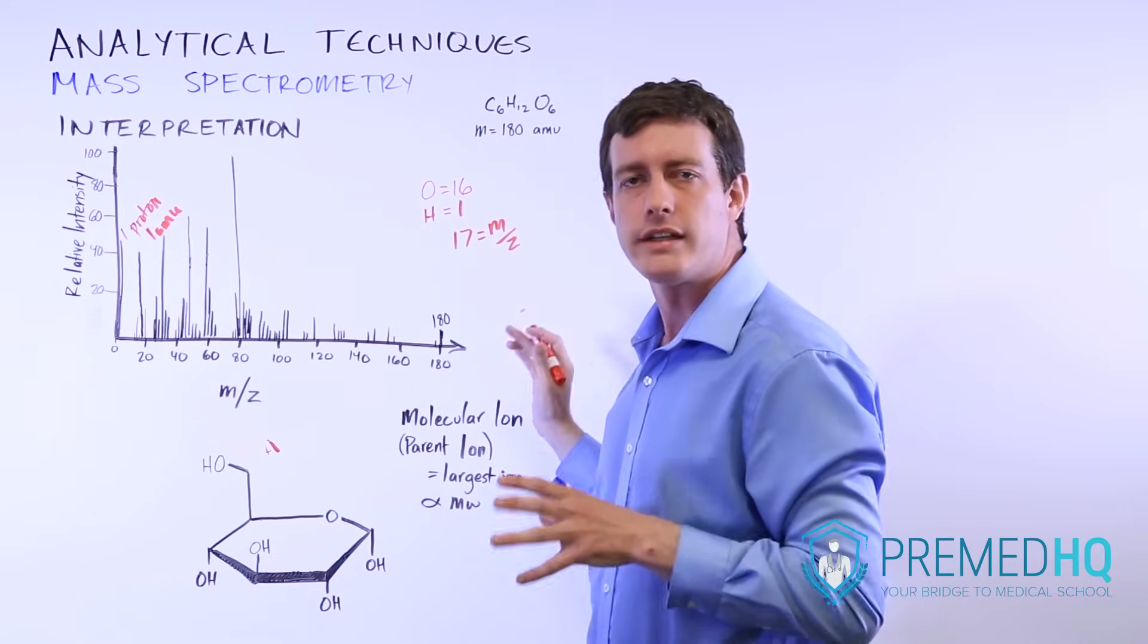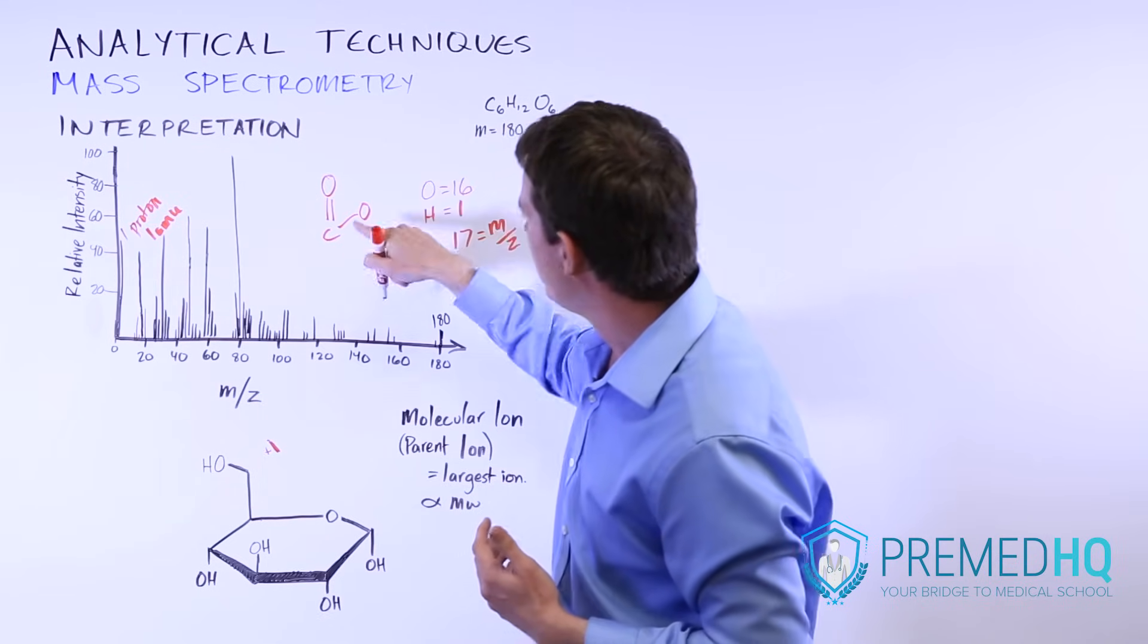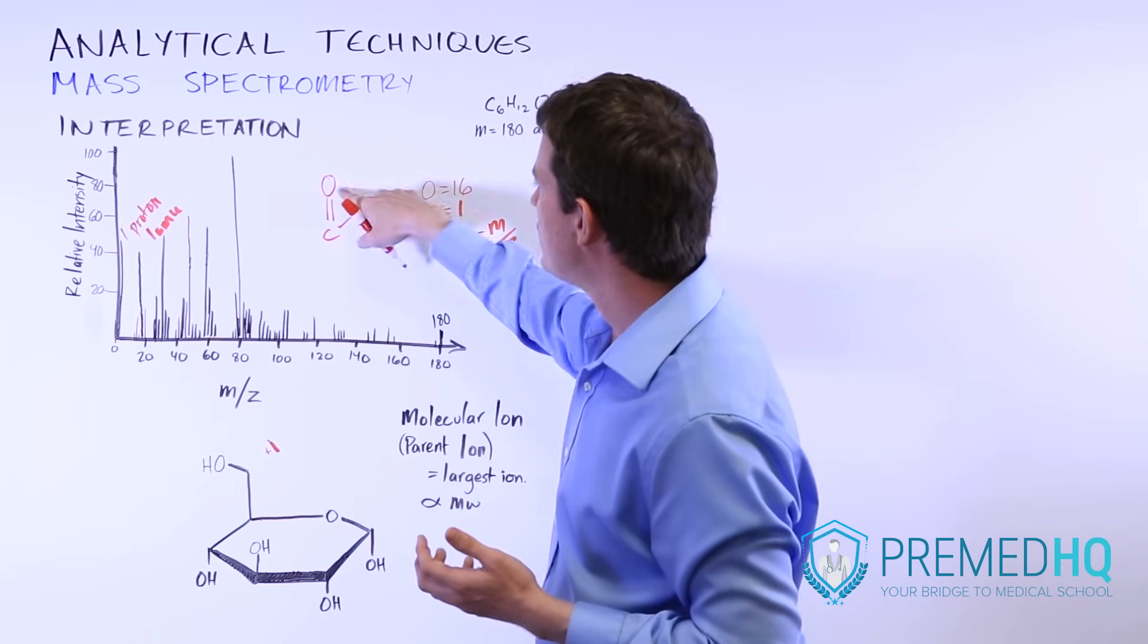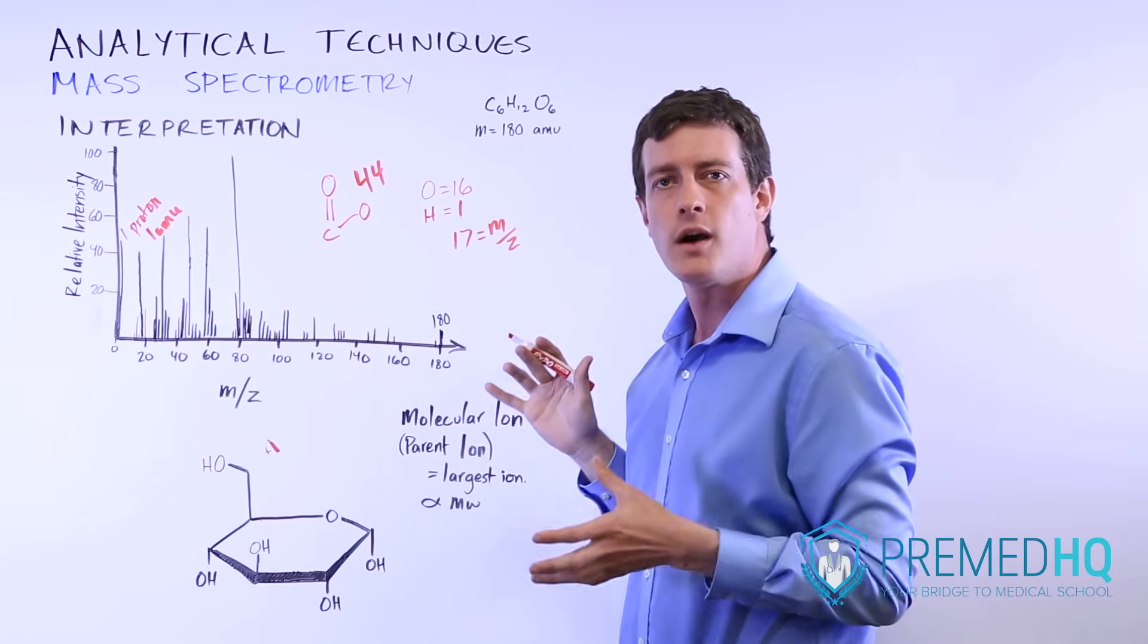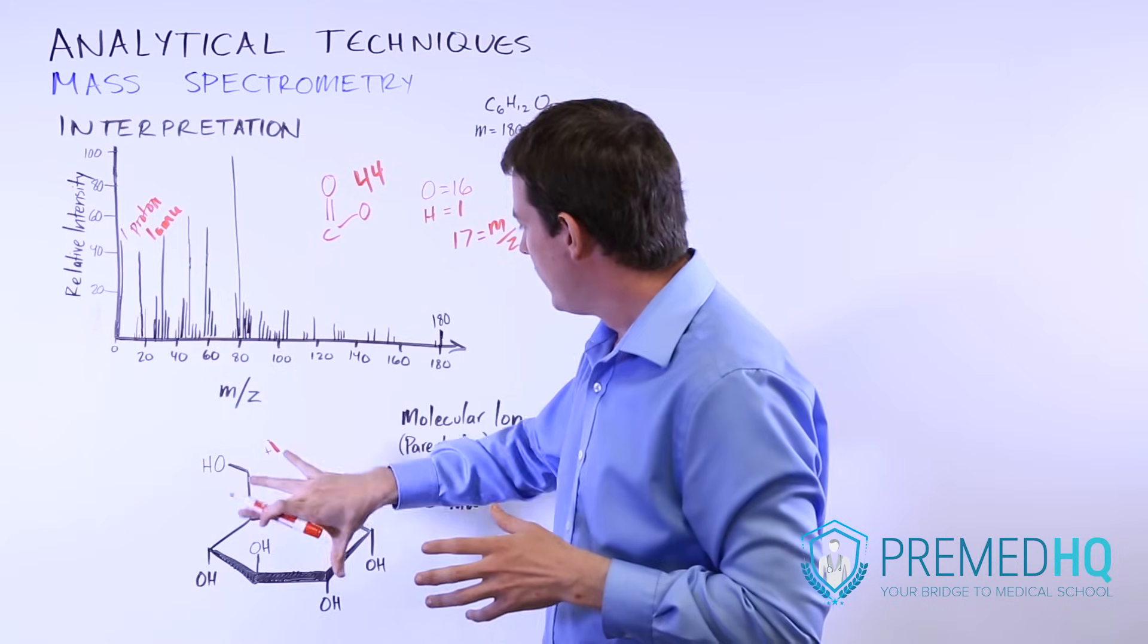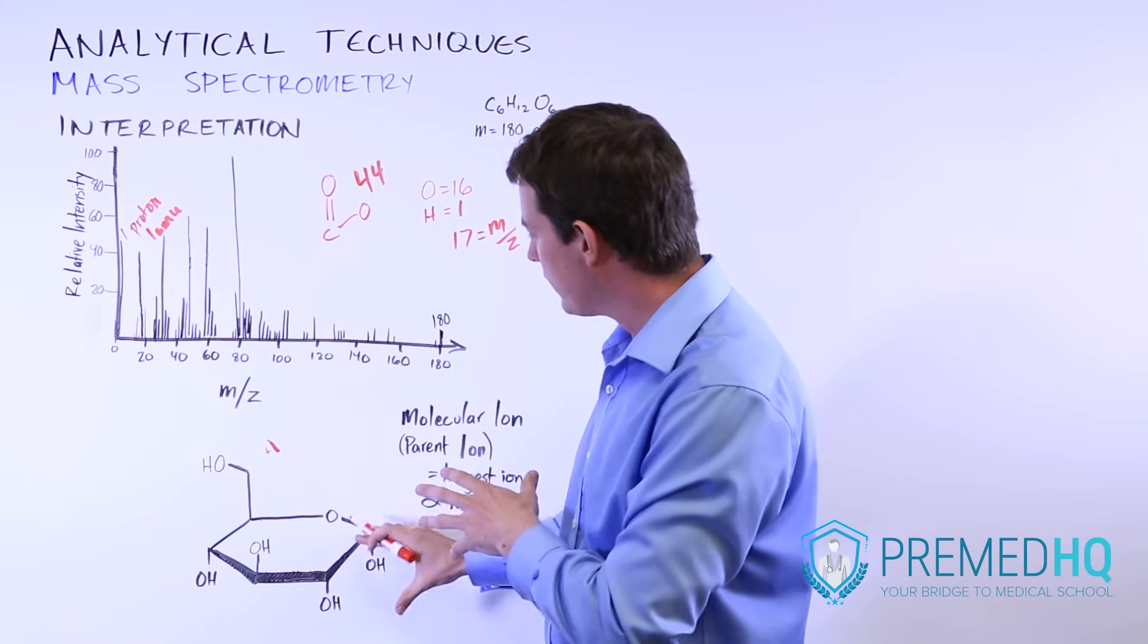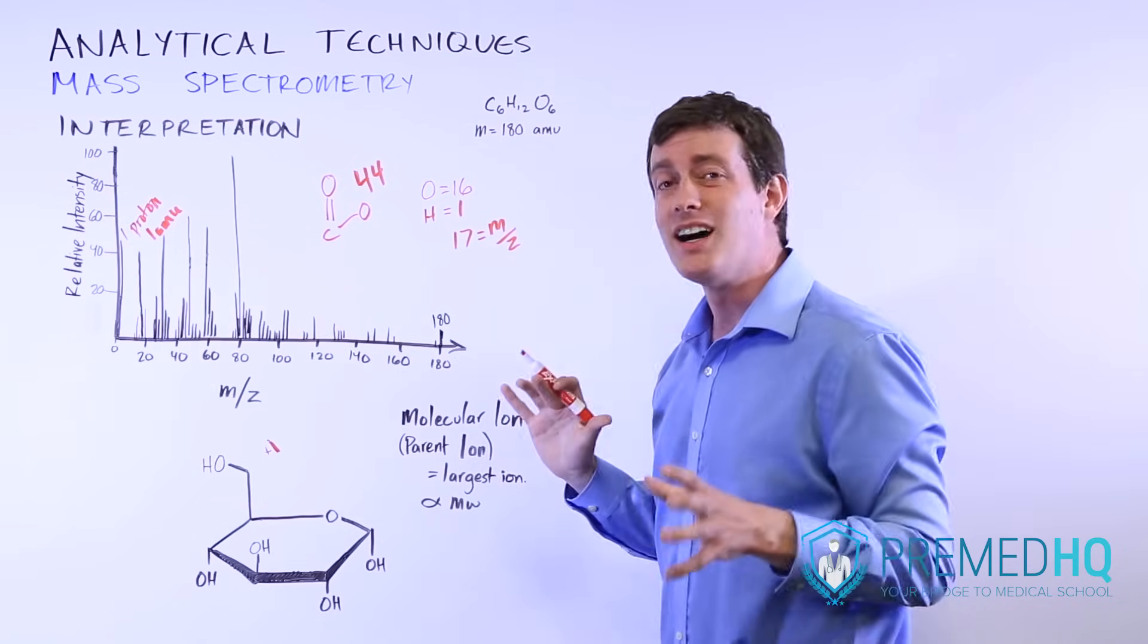Other groups that you can be aware of, but you're probably not going to be responsible for interpreting directly on the MCAT, might be something like a COO group. Notice it's not COO- anymore because we've created cations. The COO group will have a mass of 12 for the carbon and 32 for the two oxygens, so you might see a peak at 44. If you see a lot of peaks at 44, that tells you the compound has a lot of COO groups. Glucose doesn't have a ton of those.